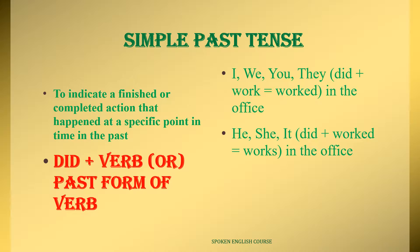In Day 11 and 12 videos, we covered the past form and past participle form for both regular and irregular verbs, so you should have a clear idea of those. For example, the verb 'work' — did plus work gives us 'worked.' Whether it is a regular or irregular verb, that's how the past form is used.